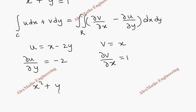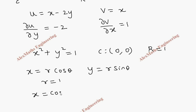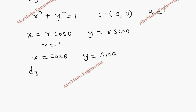The boundary is x² plus y² equal to 1, which is a circle with center at the origin and radius 1. The parametric form of the circle is x equal to r cosθ and y equal to r sinθ. Since r is 1 here, we get x equal to cosθ and y equal to sinθ, so dx is minus sinθ dθ.